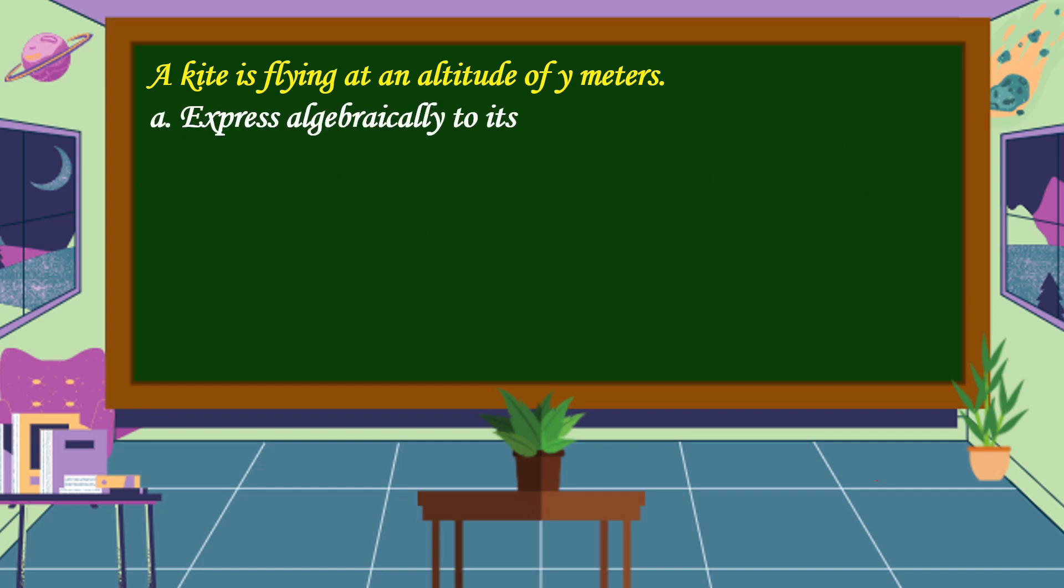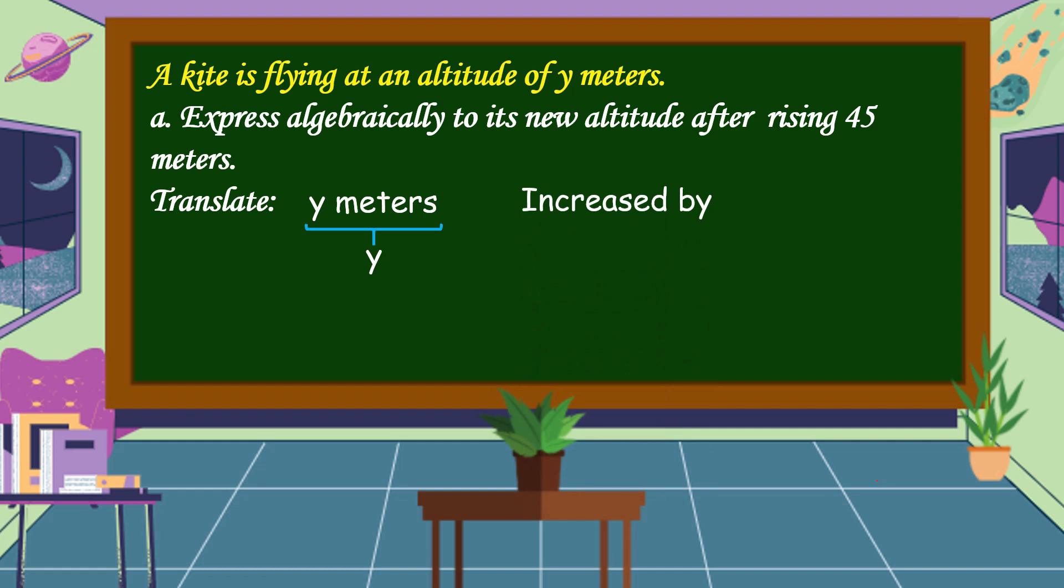Express algebraically its new altitude after rising 45 meters. Let's translate: y meters is equal to y. Rising means increased by, and the symbol is addition sign. 45 meters is 45.